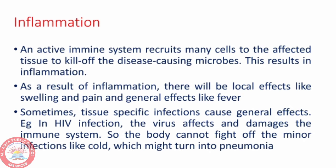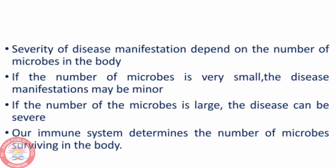For example, in HIV infection the virus affects and damages the immune system, so the body cannot fight off minor infections like a cold, which might turn into pneumonia. The severity of disease manifestation, that is the symptoms, depends on the number of microbes in the body. If the number of microbes is very small, the disease manifestations may be minor. If the number of microbes is large, the disease can be severe. Our immune system determines the number of microbes surviving in the body.